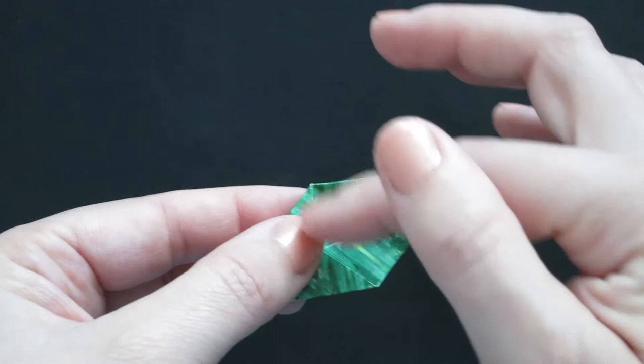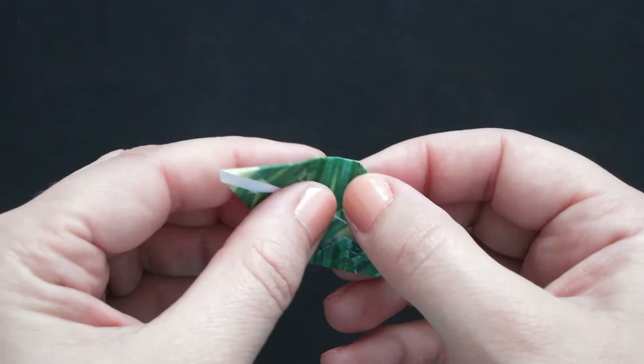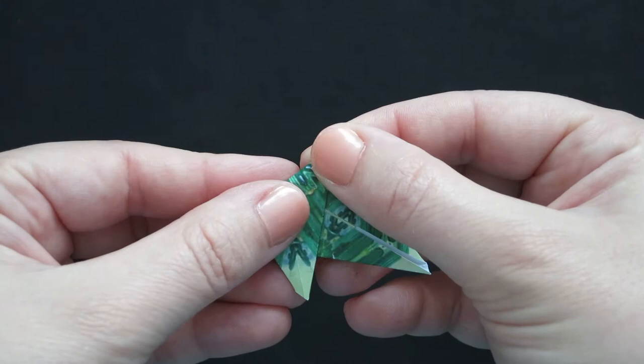Now we've folded this corner. We're going to come to the other side and do the same thing. You've got this little triangle that you've just folded in. You're going to be using the top of the triangle as a guide and you're going to fold that top section down so that this edge lines up with the top of that triangle.